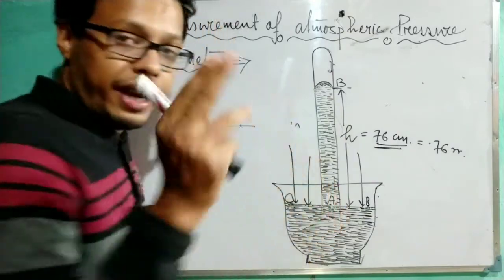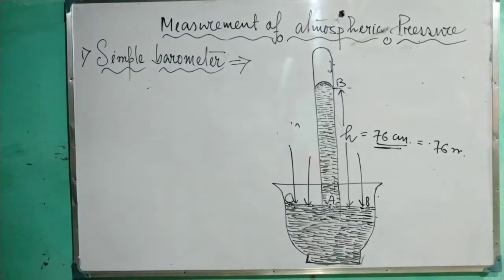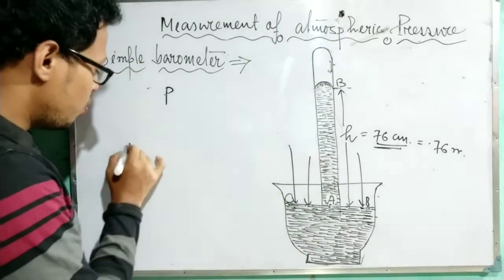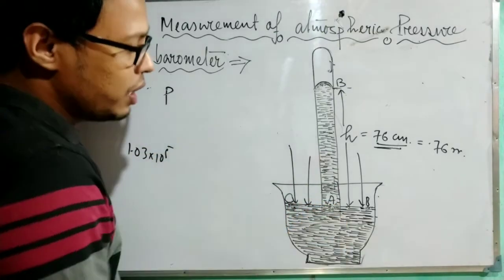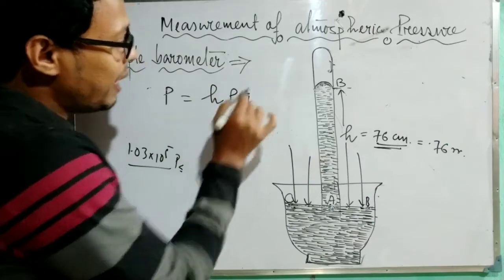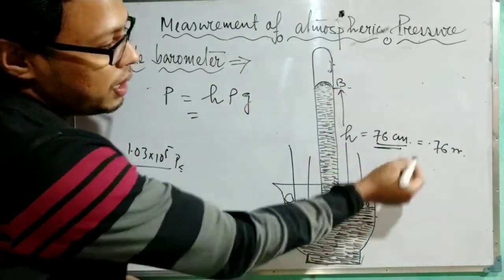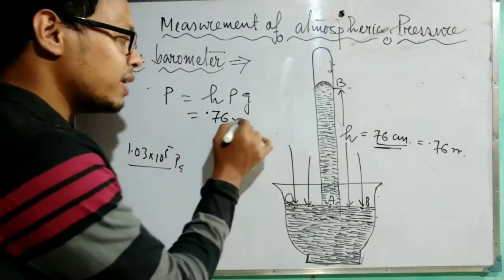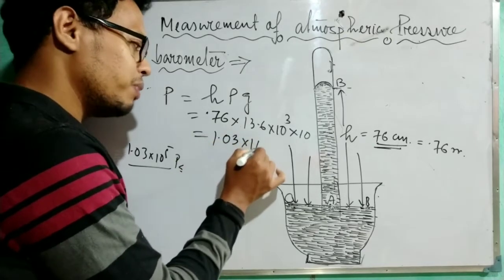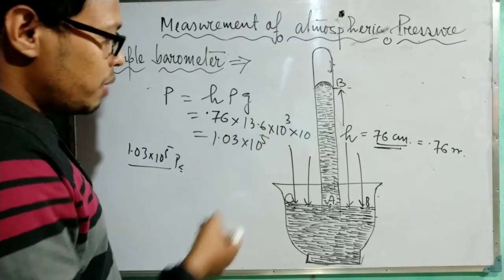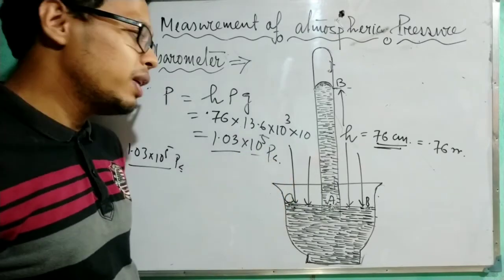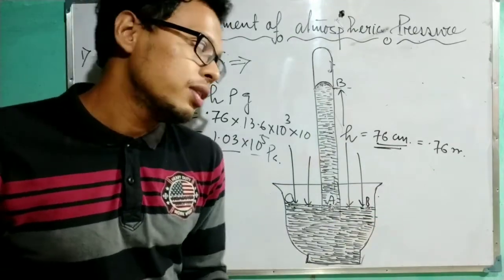The mercury level is set at a height of 76 centimeters. Applying the formula P = hρg: h = 0.76 m, density of mercury ρ = 13.6 × 10³ kg/m³, and g = 10. This gives P ≈ 1.03 × 10⁵ Pascal, which equals the atmospheric pressure of 1.03 × 10⁵ Newton per meter square. That is the explanation of why the mercury level is set at 76 centimeters in the simple or Torricelli barometer.